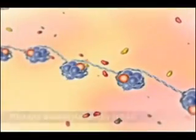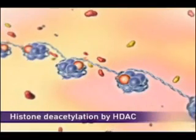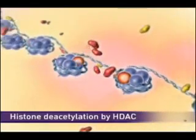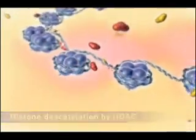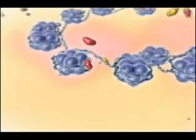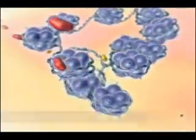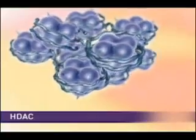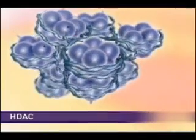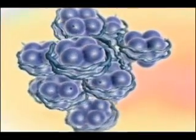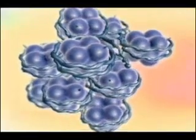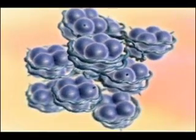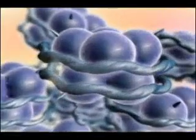Conversely, deacetylation of histones by HDAC results in tight coiling of the DNA and a closed chromatin structure. In some cancer cells, there is an overexpression of HDACs, an aberrant recruitment of HDACs, or an underexpression of HATs, resulting in hypoacetylation of histones and therefore a condensed or closed chromatin structure.